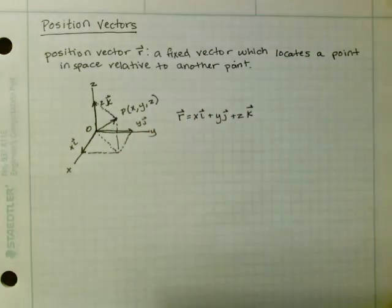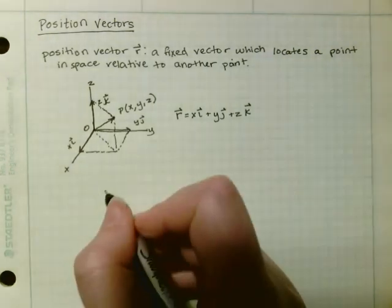All right, and this becomes really useful when you're looking between two points that aren't the origin, where one of the points is not the origin. So let's show it like this.